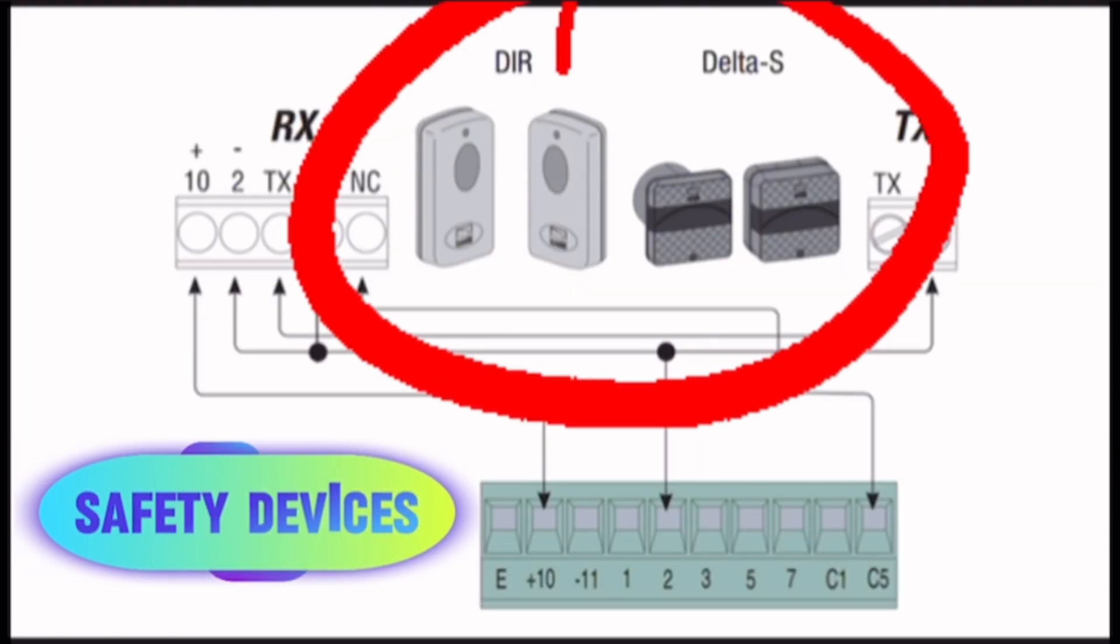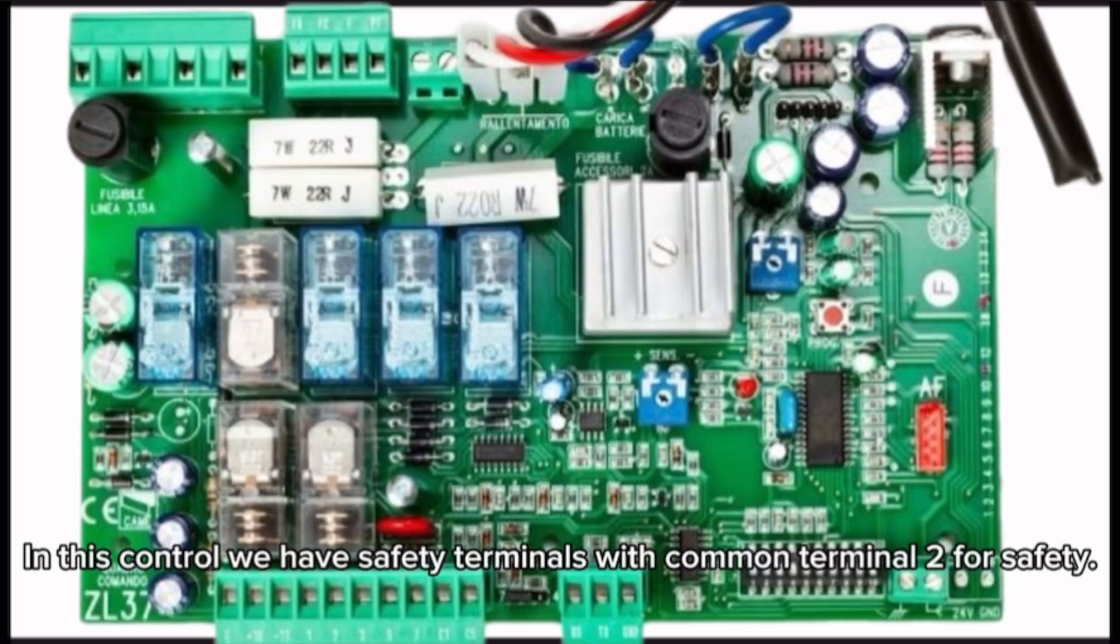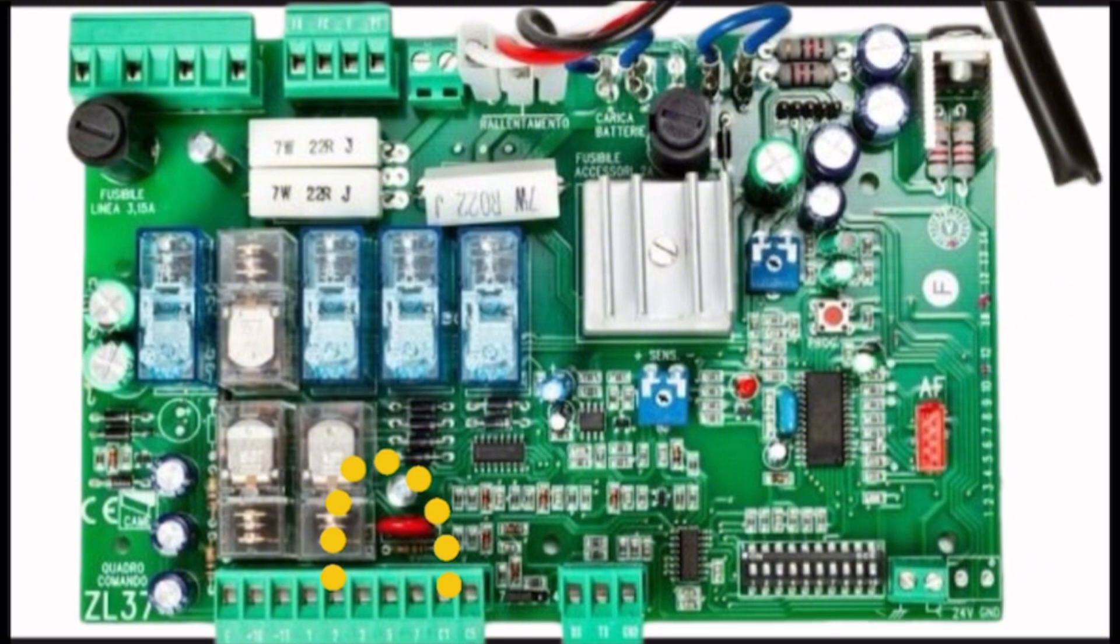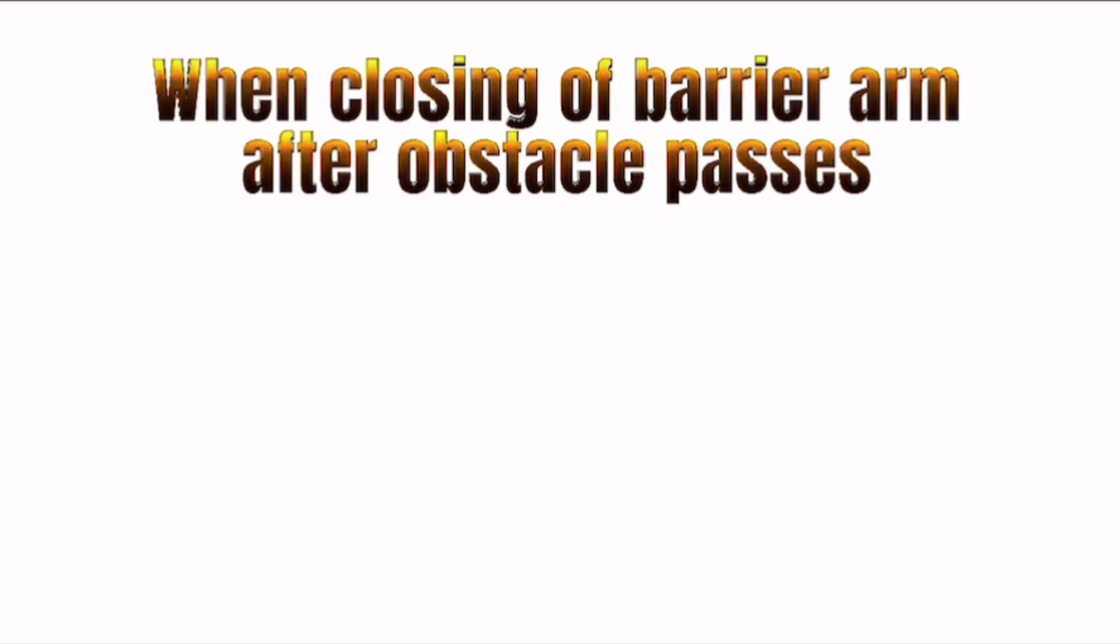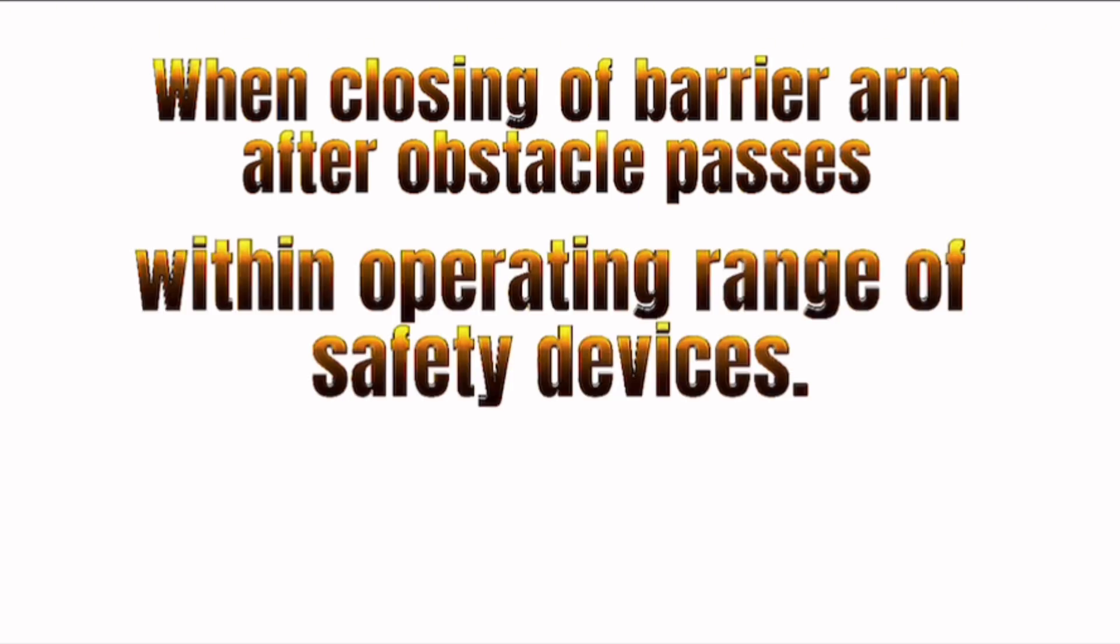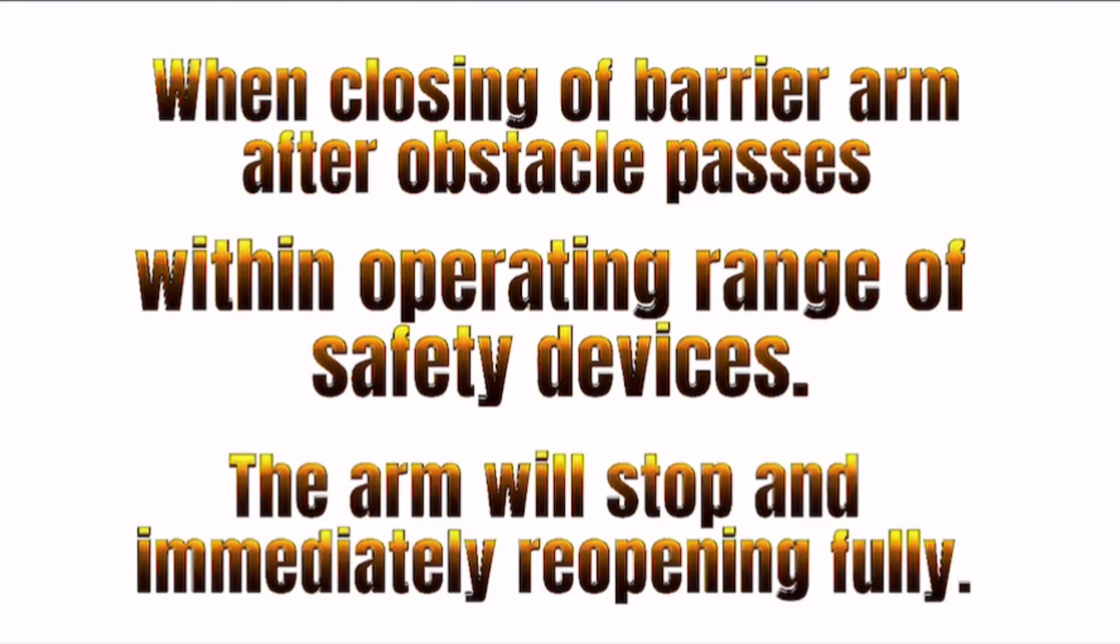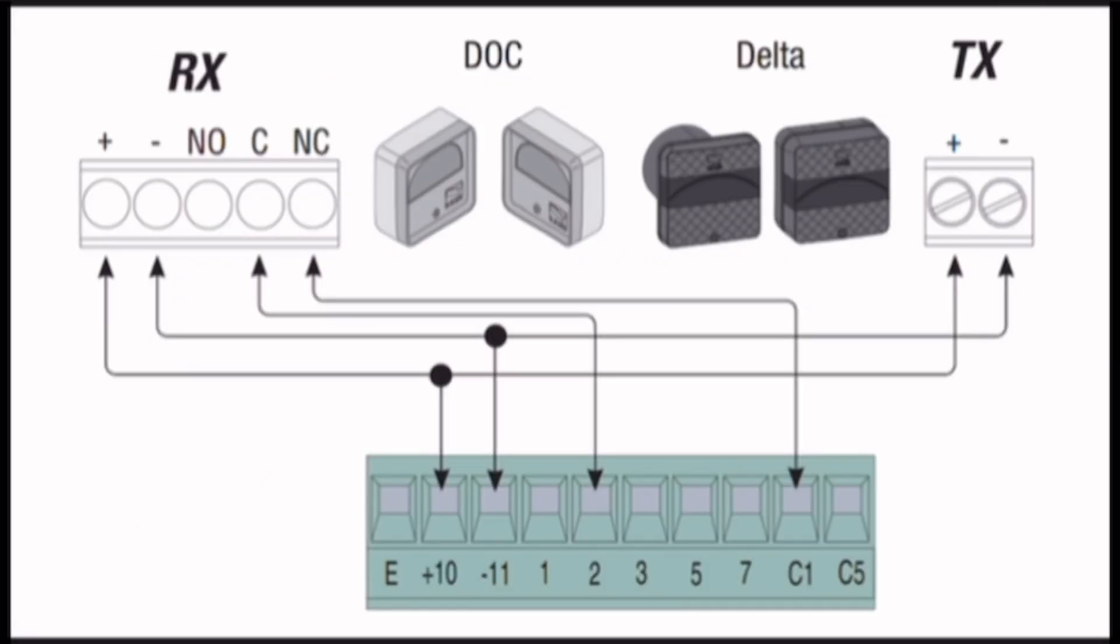Safety Devices: In this control, we have safety Terminal C1 with Terminal Common 2 as safety. When closing barrier arm after obstacle passes within operating range of safety devices, the arm will stop and immediately reopen fully.